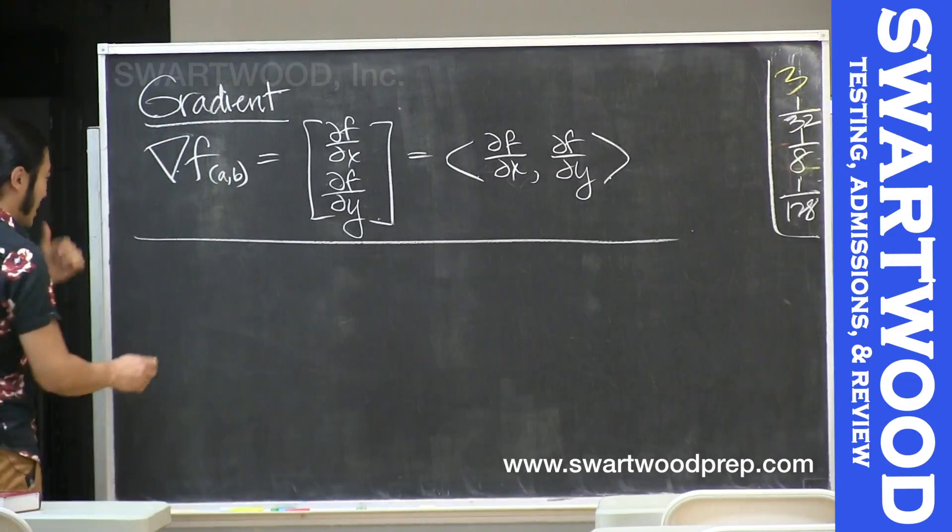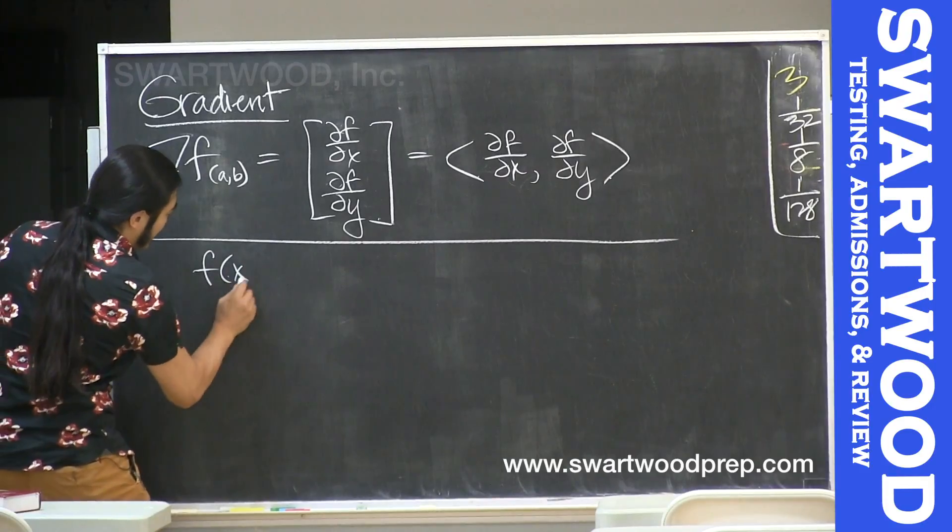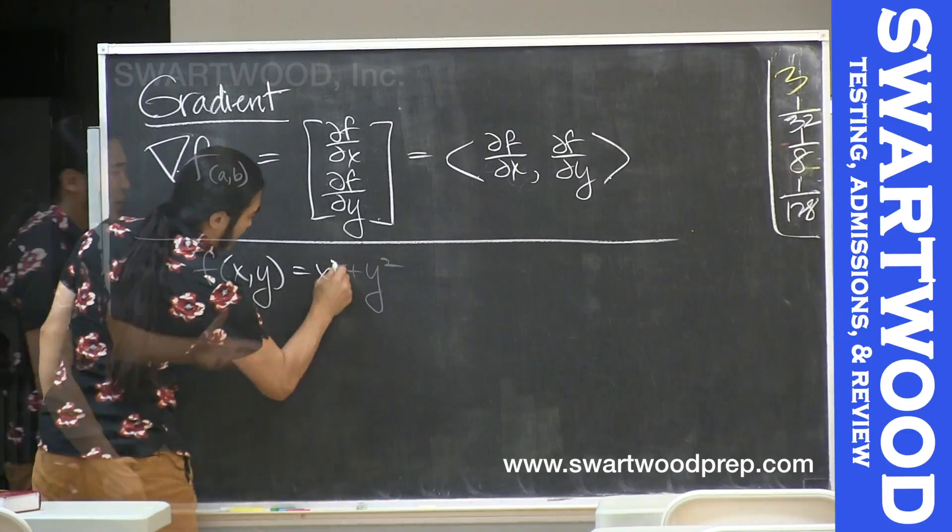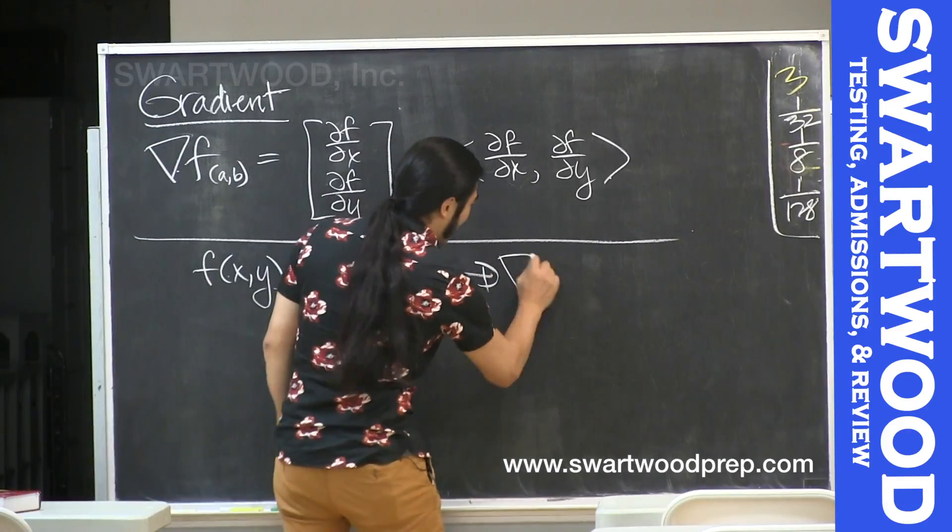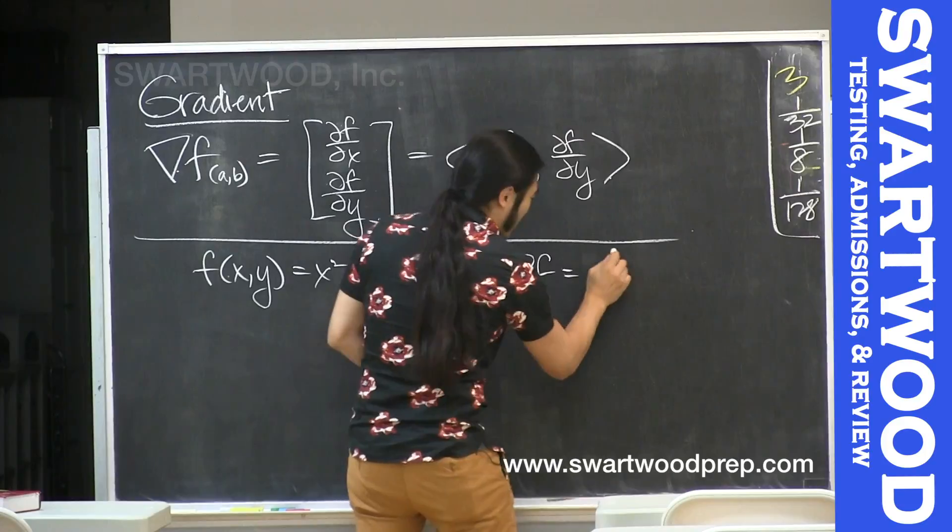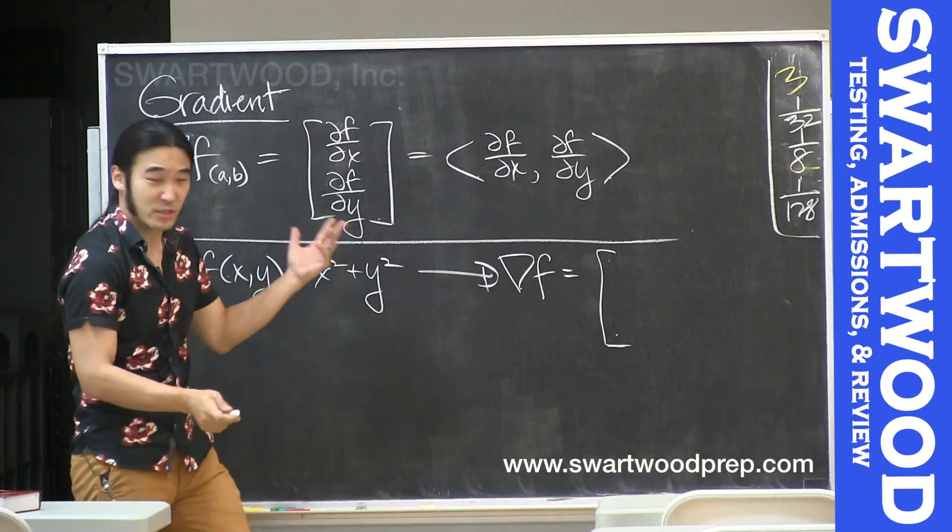As a quick example, let's say our function looks like this, and we're going to see this guy plenty of times when we look at the final exam review. If we want the gradient here, the gradient of f, it's going to be the partial of this guy with respect to x, which is going to be 2x.